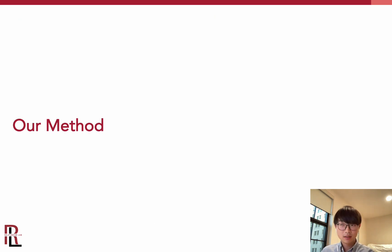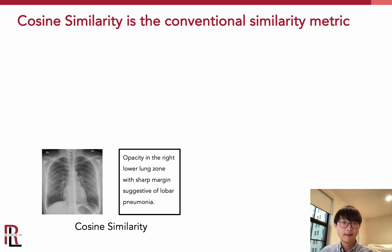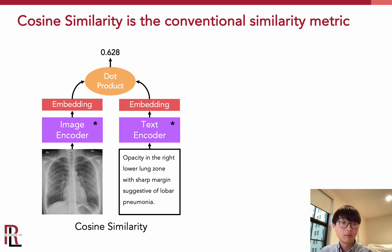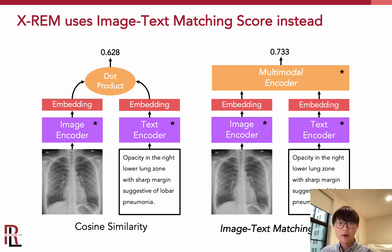As you can see, the similarity metric plays a key role in the retrieval module, and this is where the innovation of our approach comes in. Conventionally, people use cosine similarity to compute the similarity: an image encoder and text encoder compute unimodal embeddings of the image and text, and then we simply take the dot product of the two embeddings to calculate the similarity score. Our proposed method adds a third encoder — a multimodal encoder — that takes in the two unimodal embeddings to predict the similarity score.